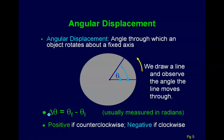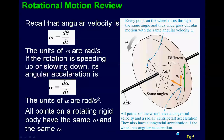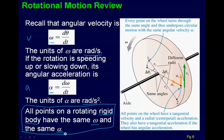It's always positive if counterclockwise and negative if clockwise — that's our definition. The whole point is that all points have the same angular displacement. Further, we defined the angular velocity, which is the analog to the linear velocity, and the angular acceleration, which is the analog to the linear acceleration. They all have units that now, instead of involving meters, involve radians.